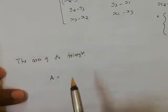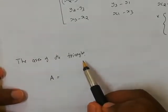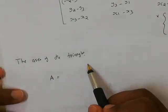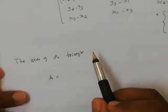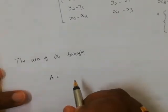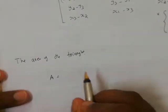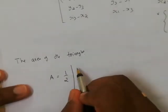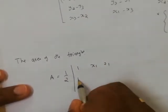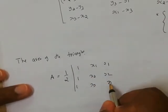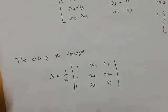The area of the triangle can be expressed as a function of the xy coordinates of the nodes 1, 2, and 3. The area of the triangle is equal to 1/2 times the determinant of the matrix with rows [1, x1, y1], [1, x2, y2], and [1, x3, y3]. This is the area of the triangle.